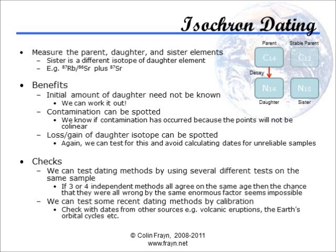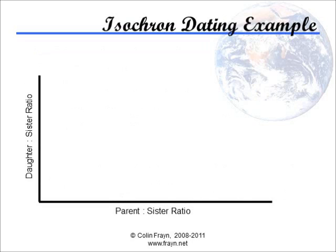Let's look at the isochron graph in more detail. Along the horizontal x-axis, I'm plotting the ratio of the parent isotope — the one that decays — to the sister isotope, which is the stable isotope of the same element as the daughter or decay product. This sister isotope is not a product of the decay and it's stable, so its concentration won't change. On the vertical y-axis, I'm plotting the ratio of the daughter to the sister. In any sample, you would expect the ratio of daughter and sister isotopes to be the same at formation — this is basic chemistry. The daughter and sister are chemically identical in almost all respects as they only differ in the number of neutrons, not protons or electrons. So whatever the ratio on the y-axis is, it would have been the same for all samples initially.